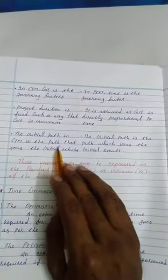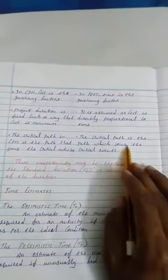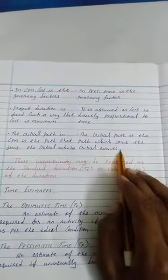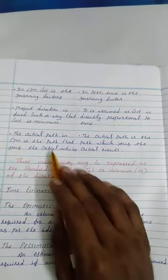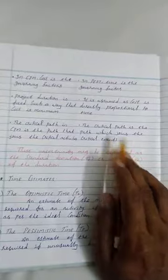The critical path in CPM is the path that joins the critical activity that we people know very well. The critical path is the path which joins the critical events. If it joins the critical activity, that is called a critical path. If it joins, that is a critical event, which is called a critical path.